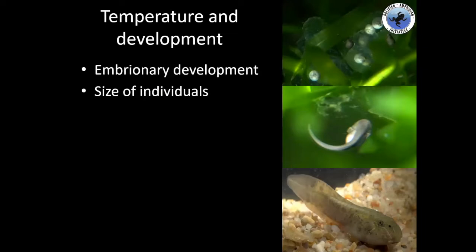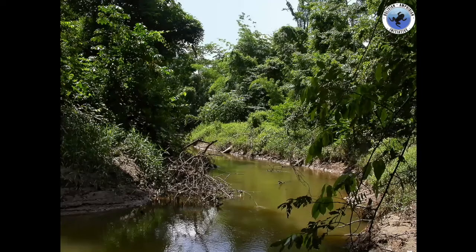There is also an effect on development. Some tadpoles are going to develop faster or slower depending on the temperature, and the size of individuals is also going to be affected. If you're working in a habitat, you should know not just the big habitat where the frog lives, but the microhabitats — because all these small microhabitats are going to have different temperatures and different incidences of sunlight. You should know the natural history of the species to see where the frog chooses to live, and then replicate those conditions in captivity.